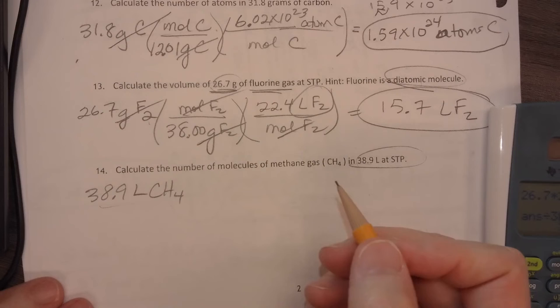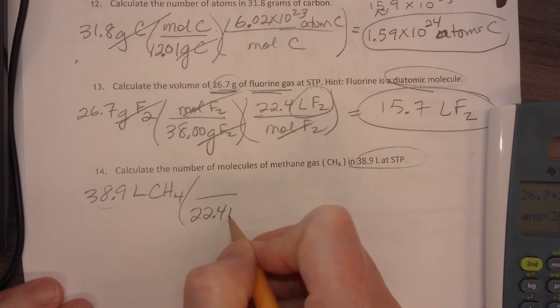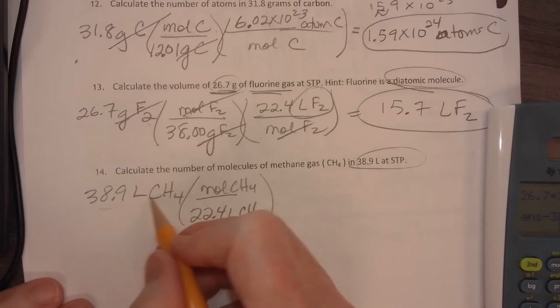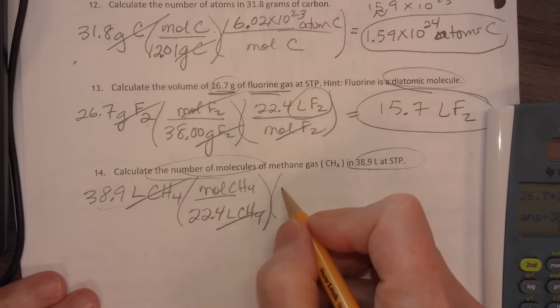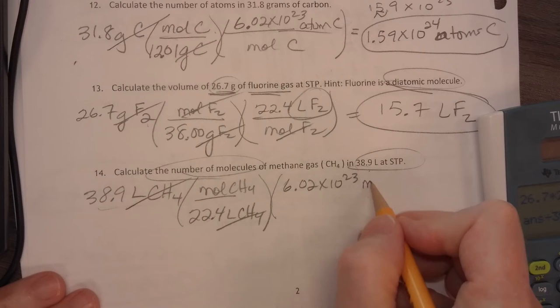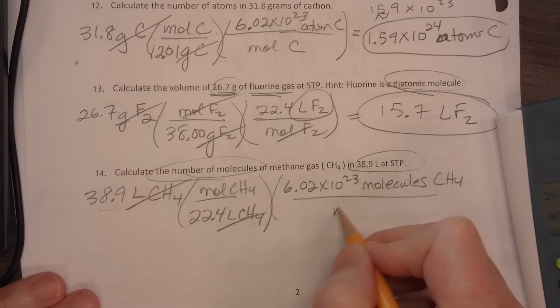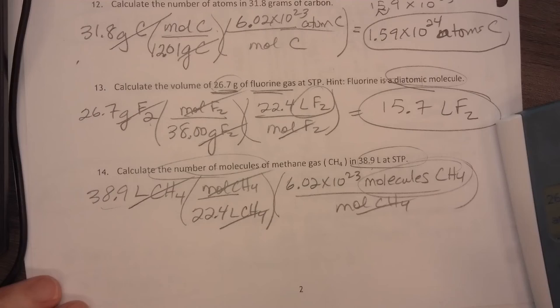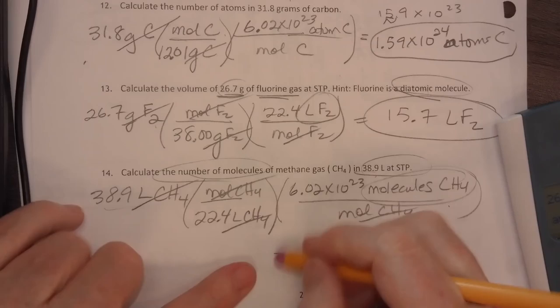I know that the first thing I need to do is change it to moles. I know there are 22.4 liters of methane gas for every mole of methane gas at standard temperature and pressure. The volume divides out. I now know molecules. There are Avogadro's number of molecules, 6.02 times 10 to the 23rd, molecules of methane gas per mole of methane gas. Moles divide out, and I get molecules of methane gas.